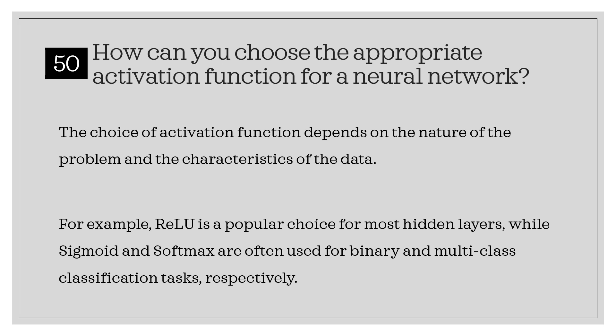How can you choose the appropriate activation function for a neural network? The choice of activation function depends on the nature of the problem and the characteristics of the data. For example, ReLU is a popular choice for most hidden layers, while Sigmoid and Softmax are often used for binary and multi-class classification tasks, respectively.